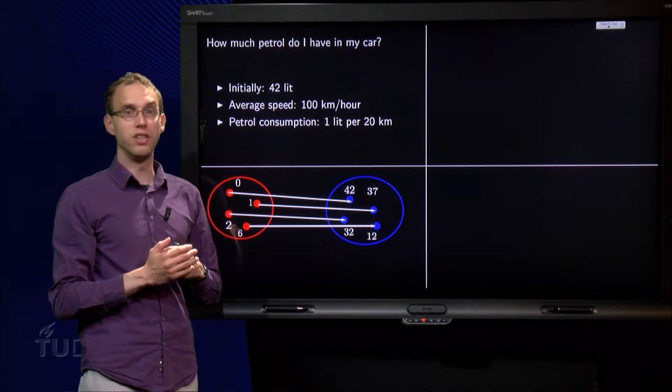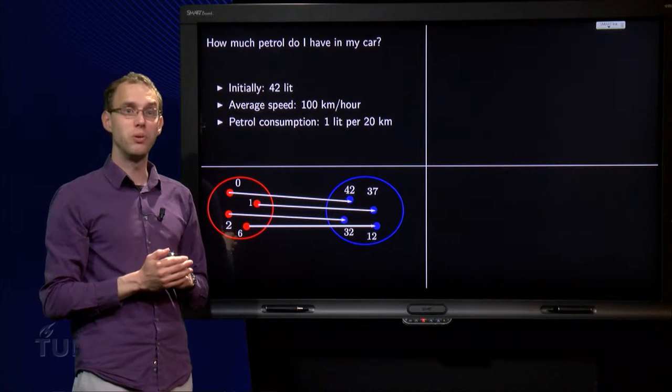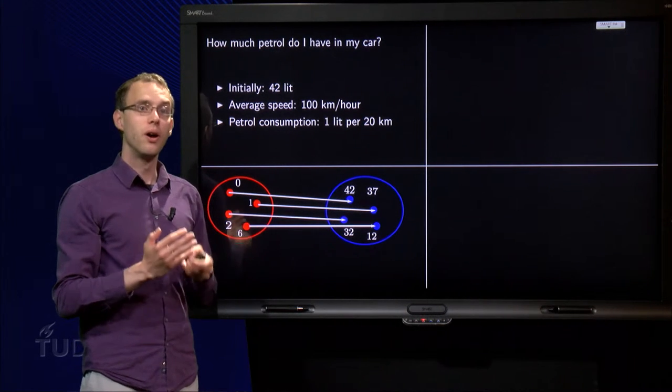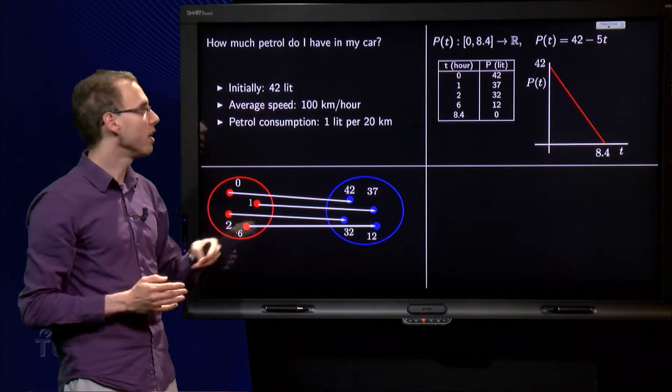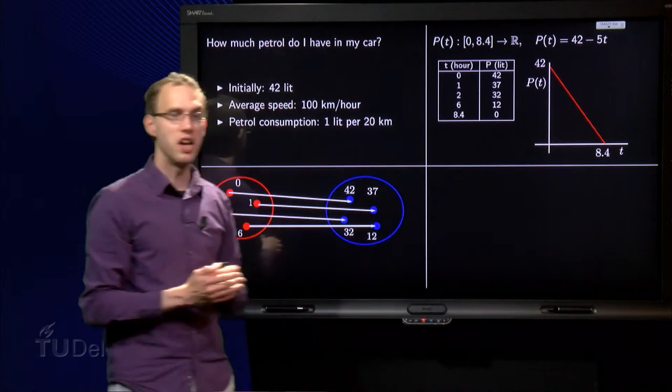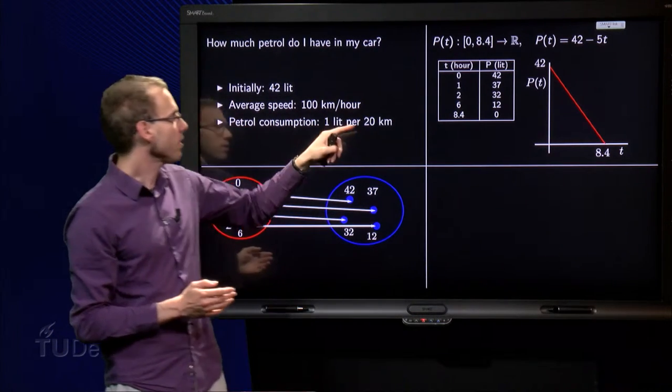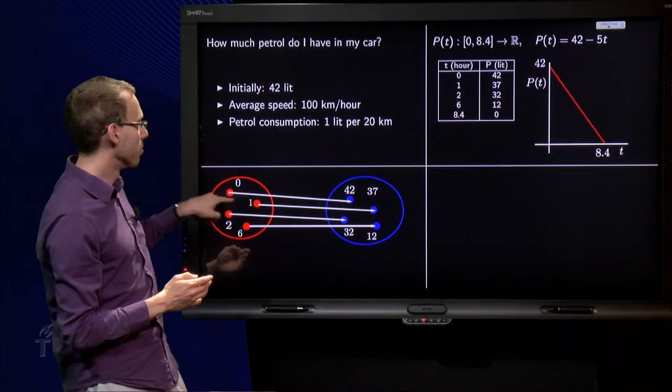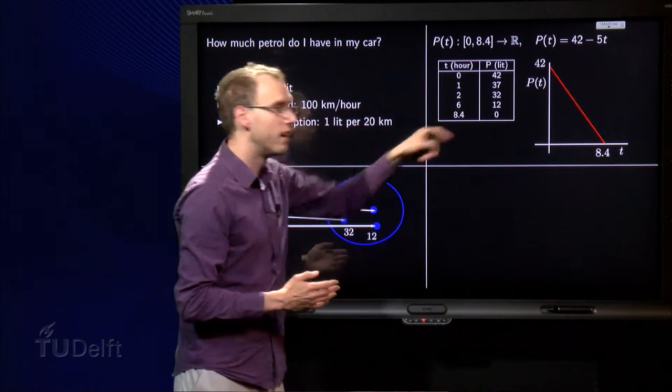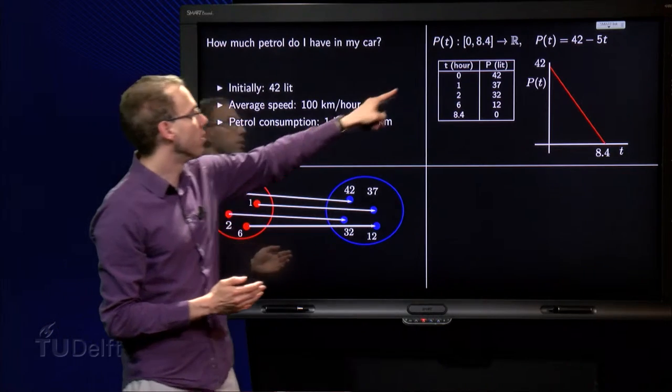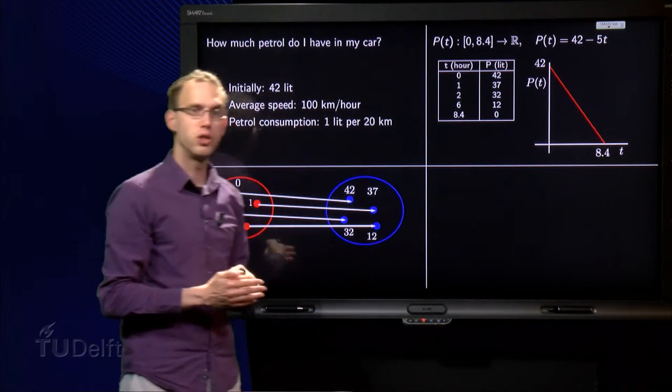As we have seen there are multiple ways to represent a function. One way was the description, which we did already. Another way is to give a table over here. So, we put all those numbers in the domain in the first column, and the numbers in the codomain in the right column. So, after 0 hours we have 42 liters, etc.